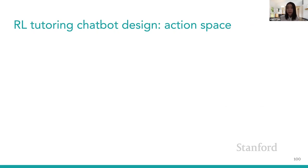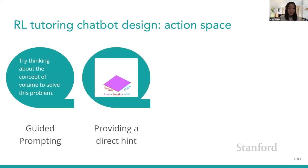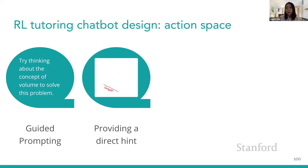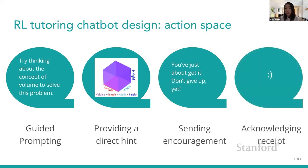For the action space, similar to the wizard, the RL tutoring chatbot could perform four actions: guided prompts (e.g., 'try thinking about the concept of volume to solve this problem'), direct hints (e.g., sending the formula for volume), encouraging messages, and simply acknowledging receipt of a message by sending a smiley face without meaningful feedback.